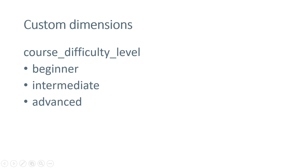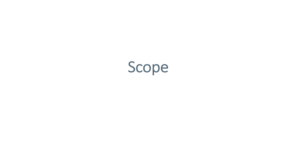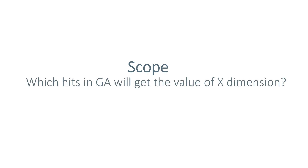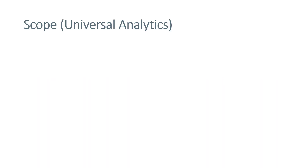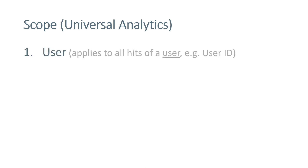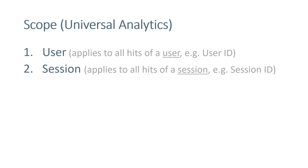Before we configure custom dimensions, we need to get familiar with another concept: scope. Basically, scope answers the question of which hits in Google Analytics will get the value of that particular dimension. In Universal Analytics, also known as GA3, there are four scopes. User scope means that when you send something, that dimension is applied to a user and all of its hits — for example, user ID or user type, such as free user versus paying user.